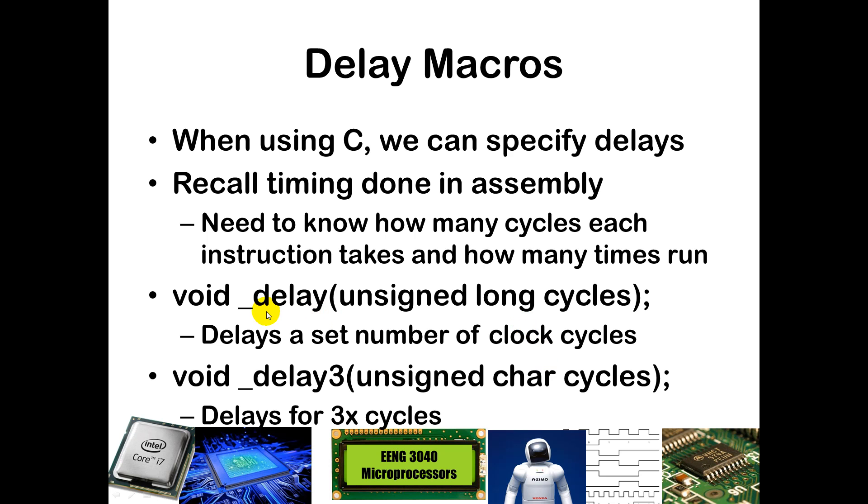And there's several different ways you can do that. If you wanted to delay a set number of clock cycles, you could just say underscore delay, and then you have an unsigned long, and you can delay for that many clock cycles. And so that could be anywhere between 0 and 65535, the value that's supported by 16 bits there.